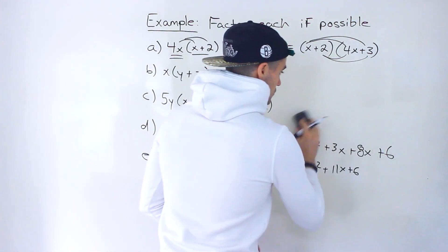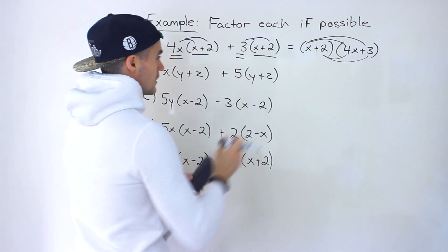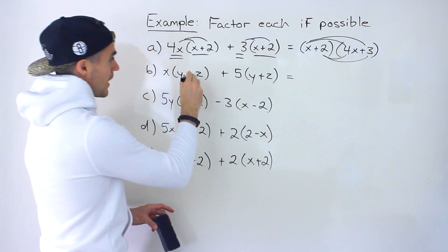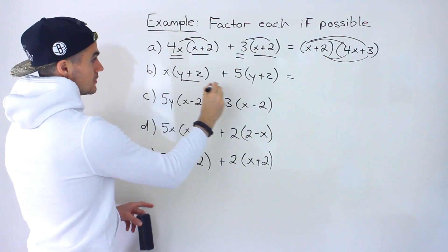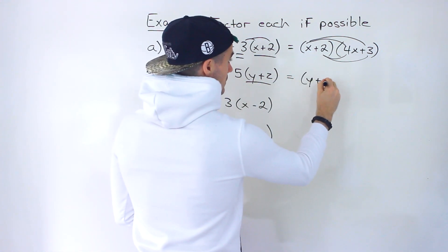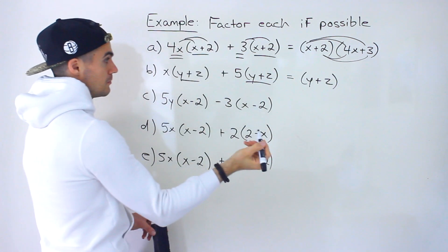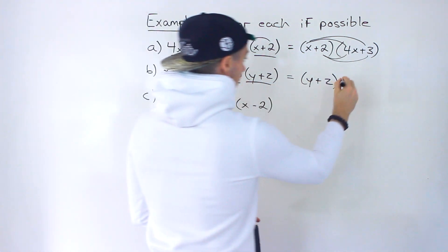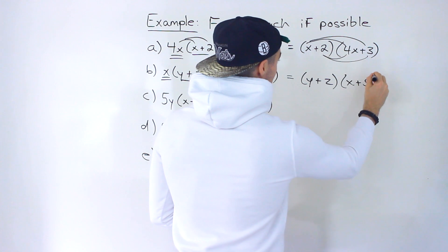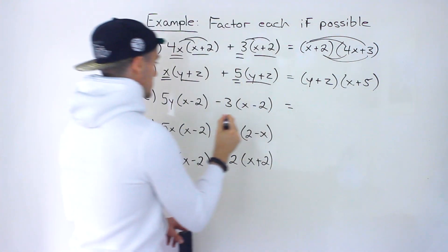So moving on to part B, notice that we got x times y plus z plus 5 times y plus z. So what we can do, we could take out the y plus z for both of these. That's the common binomial expression. And what are we left with? We're left with x plus 5 right here.